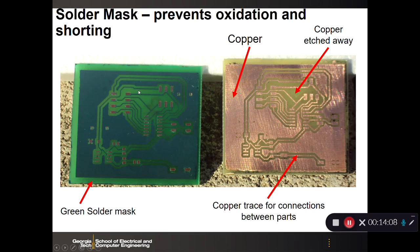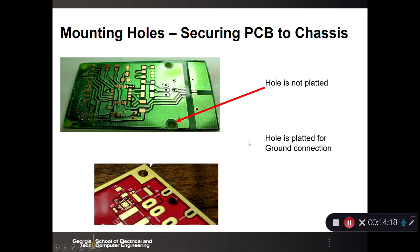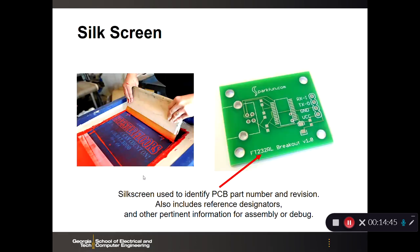Mounting holes are about securing the PCB to the chassis. An unplated hole simply provides mechanical attachment, while a plated hole can provide a ground connection. If you're designing a board with high-speed signals and need a good ground plane, you can plate the mounting hole and use a screw to connect it to chassis, giving better grounding for your printed circuit board.